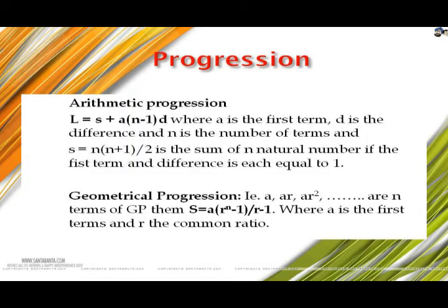Arithmetic progression: In arithmetic series, he also gave formulas for the last term and sum of a given AP series. L = a + (n−1)d, where a is the first term, d is the common difference, and n is the number of terms. S = n(n+1)/2 is the sum of n natural numbers when the first term and difference are equal to 1.